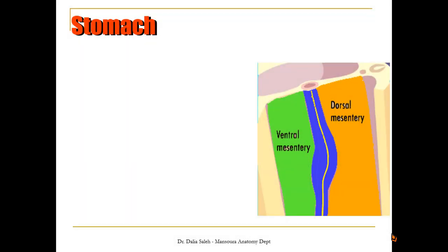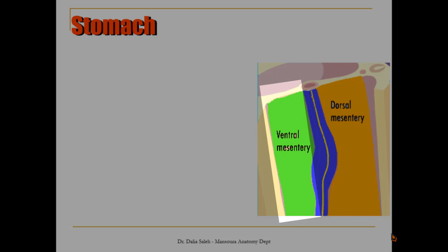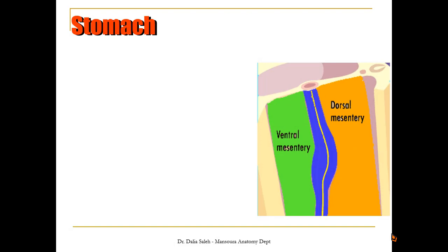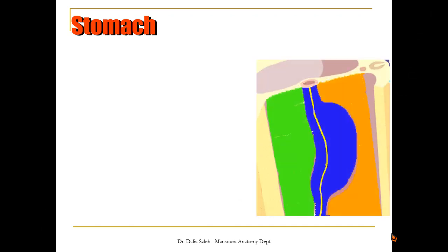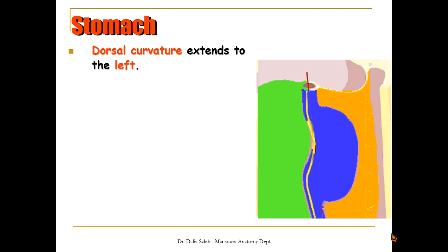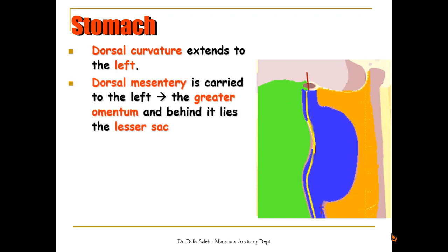In this longitudinal section, the foregut is suspended to the anterior abdominal wall by the ventral mesogastrium and to the posterior abdominal wall by the dorsal mesogastrium. We are looking at the stomach from its left surface, where the left vagus nerve is visible. The dorsal part grows faster than the ventral part, and after clockwise rotation along its longitudinal axis, the left surface faces ventrally and the dorsal curvature extends to the left, forming the greater curvature of the stomach.